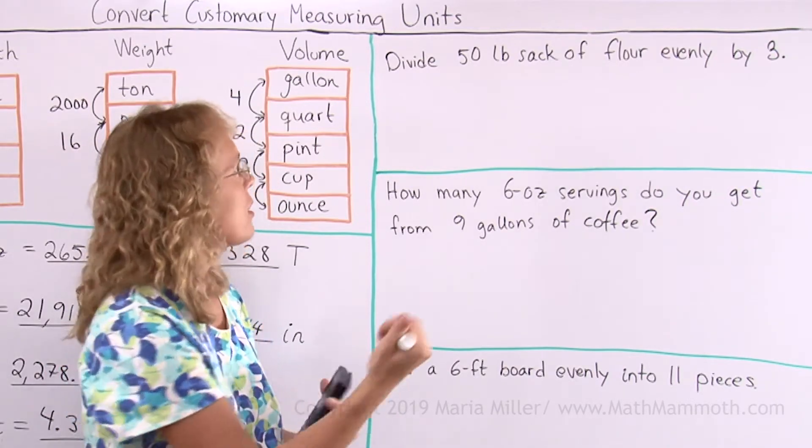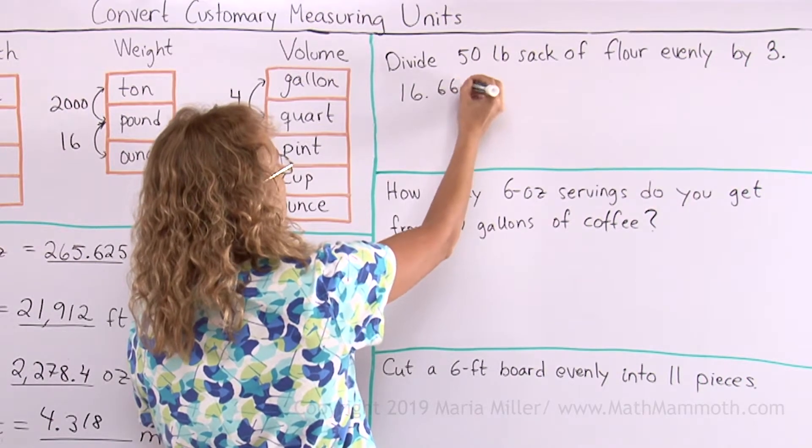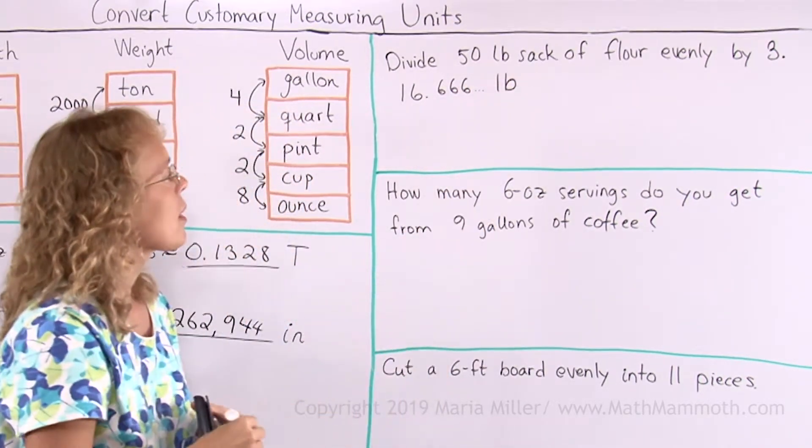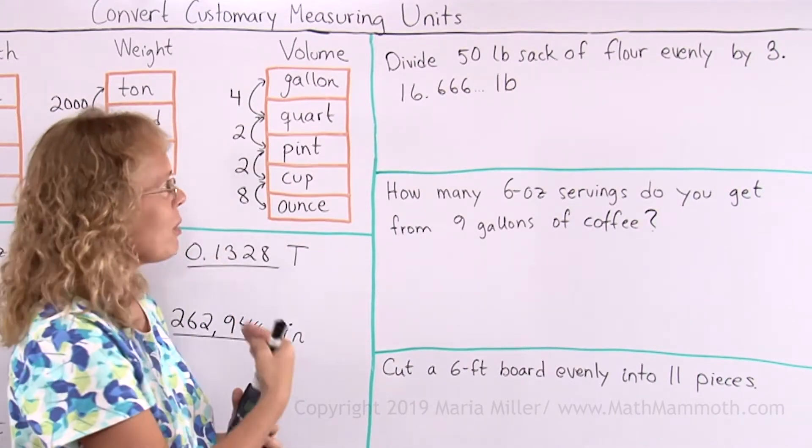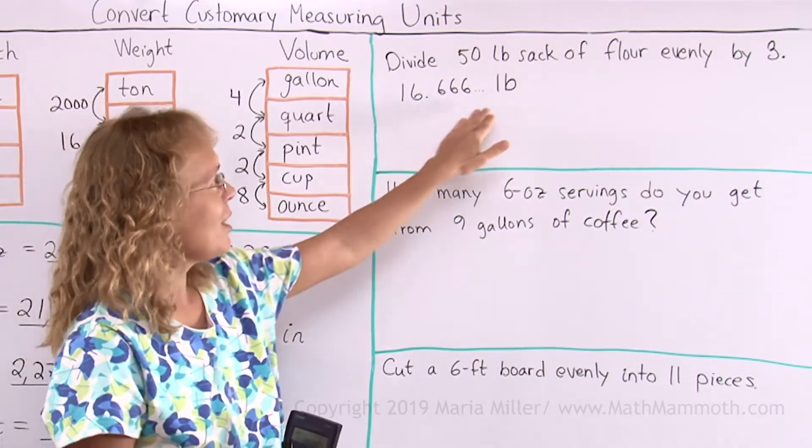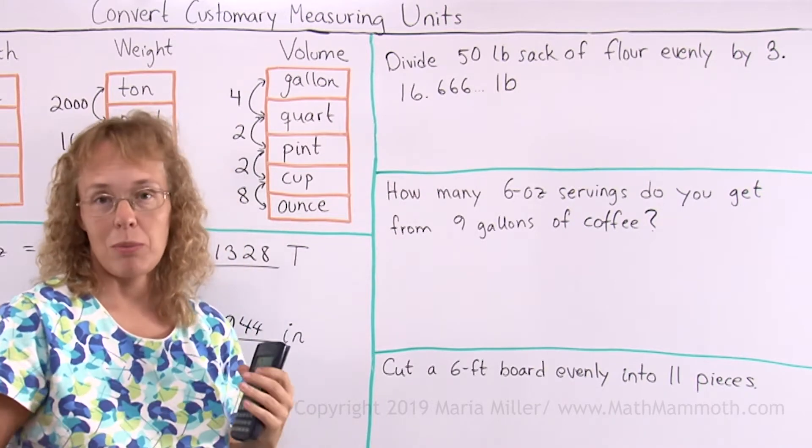It is 16.666 pounds. Now I want to express this as so many pounds and ounces. Of course it is going to be 16 pounds. It's this decimal part that I need to convert into so many ounces.